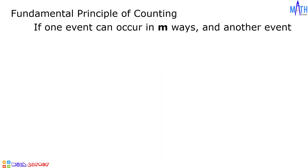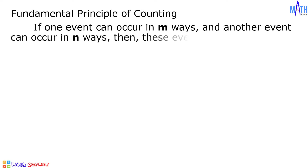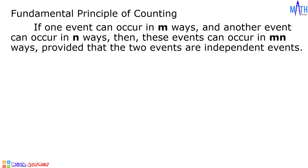If one event can occur in m ways and another event can occur in n ways, then these events can occur in m times n ways, provided that the two events are independent events.